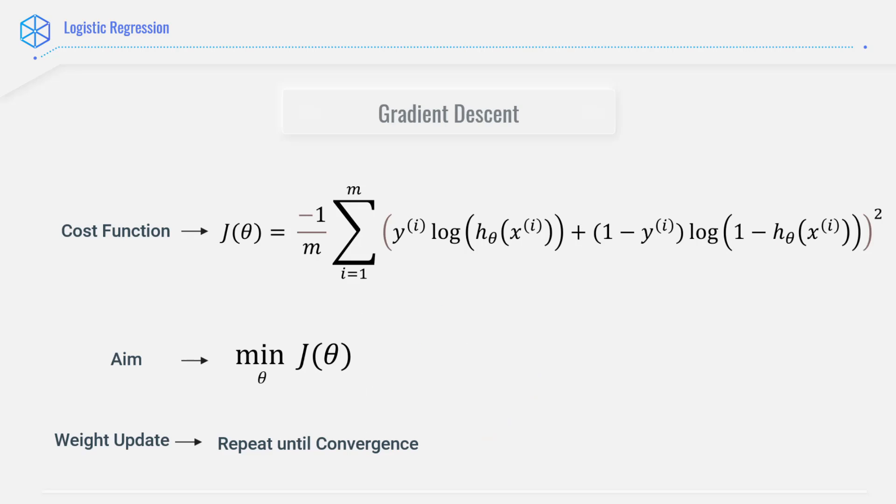And just like we did in linear regression, we'll perform gradient descent here as well on our cost function. So our cost function is this equation as we saw previously, and our aim is to minimize this cost function.